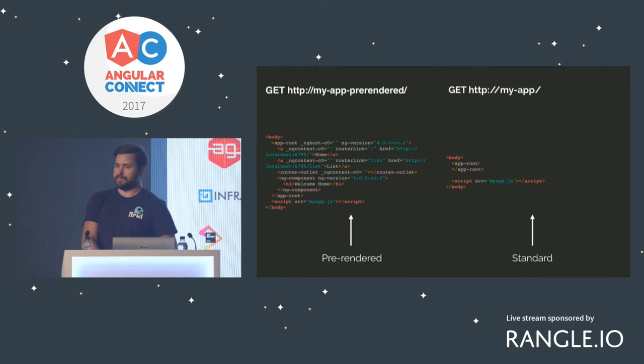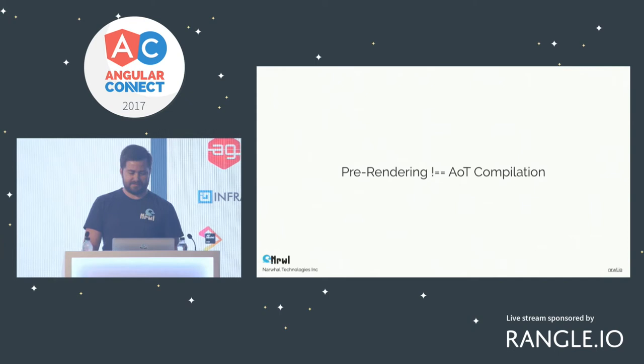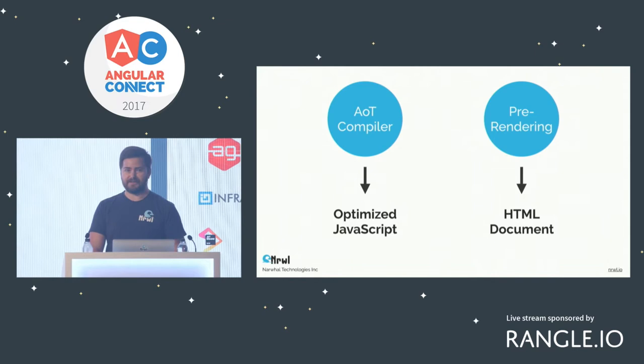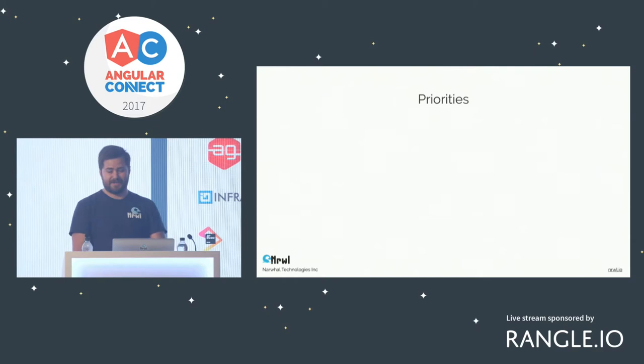On the left is what we see when something's pre-rendered, opposed to on the right where we just see an empty page waiting for Angular to bootstrap and take over. It's sometimes asked: is this the same thing as AOT compilation? The AOT compiler produces optimised JavaScript so your code can be smaller and faster, whereas pre-rendering actually generates an HTML document.